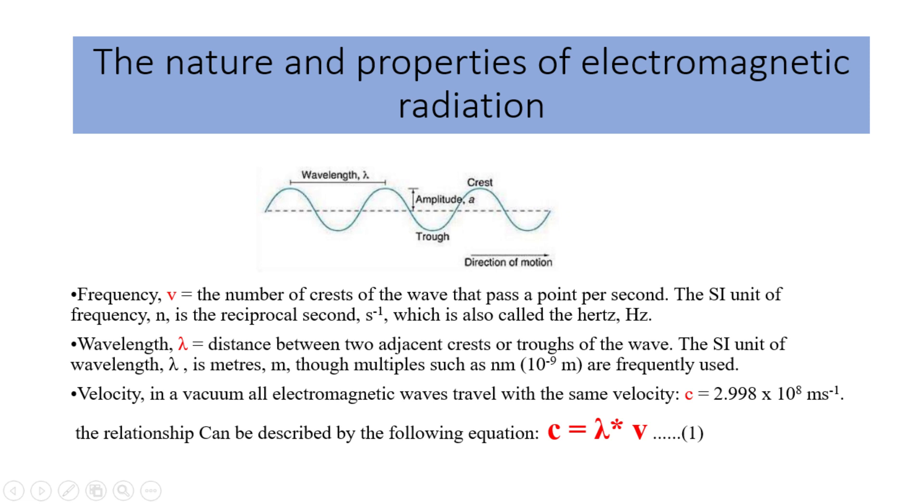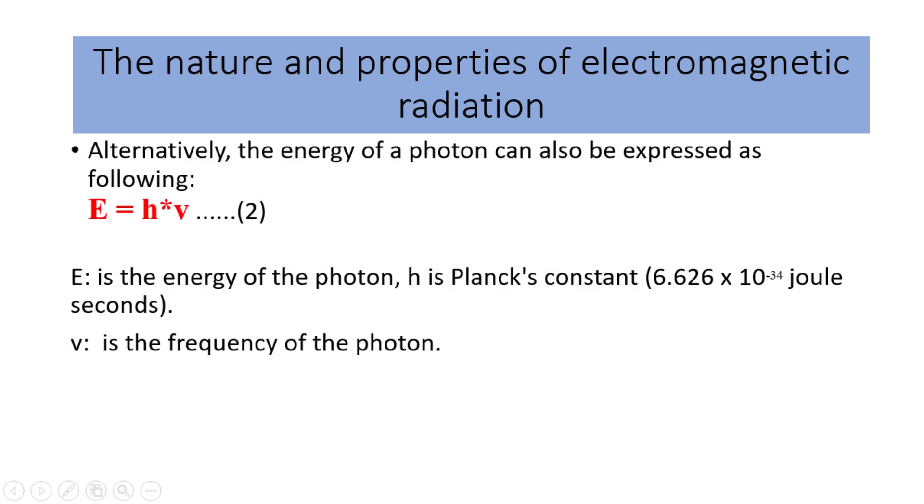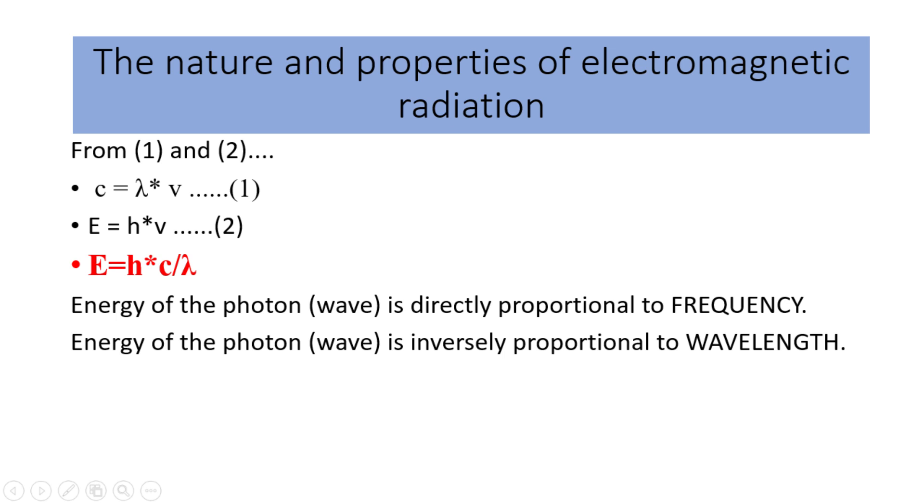c is the velocity, but in a vacuum, all electromagnetic waves travel with the same velocity. So, c equals 2.998 times 10 to the power of 8 meters per second. Alternatively, the energy of a photon can also be expressed as follows. Energy equals Planck's constant times frequency, or E is equal to h multiplied by nu. E is the photon's energy, and h is Planck's constant, 6.626 times 10 raised to the power negative 34 joule seconds. Nu is the frequency of the photon. If we combine the two equations, energy equals Planck's constant times the speed of light divided by wavelength, or E is equal to h multiplied by c and divided by lambda.